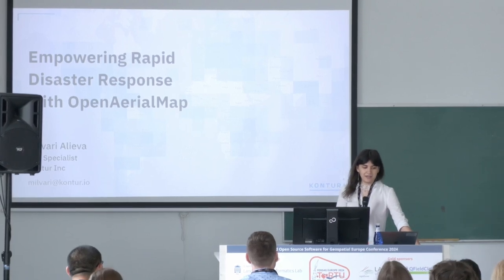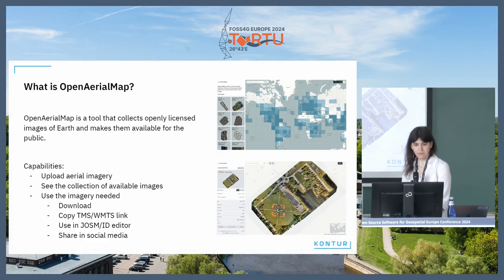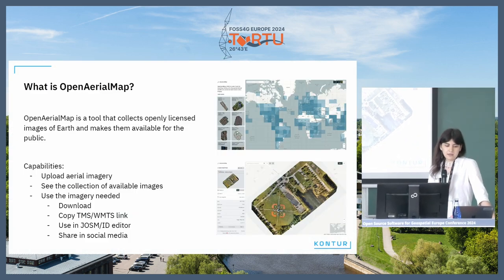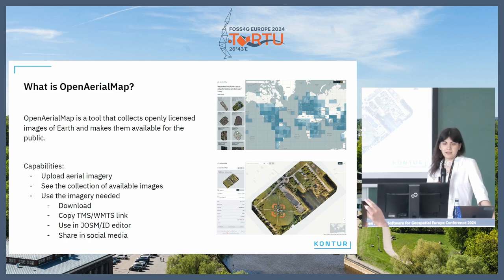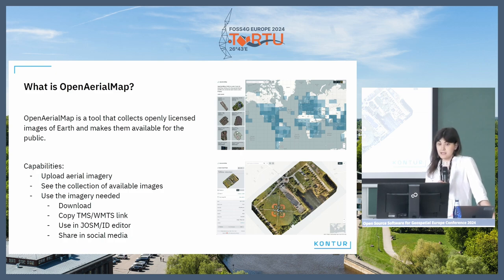It's not a secret that imagery is vital during critical moments like disasters. Imagery from satellites, from UAVs or other aircraft is becoming increasingly available after a disaster. And it's often difficult to recognize what is available and accessible. To solve this problem, Open Aerial Map was invented.